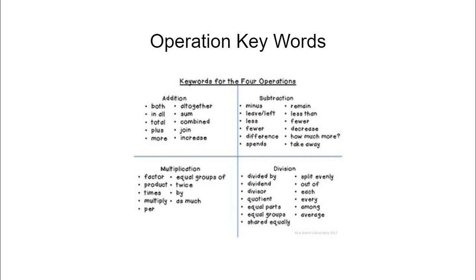And then you have divided by dividend divisor, quotient, equal parts, equal groups, shared equally, split evenly out of each, every, among, and average for division.